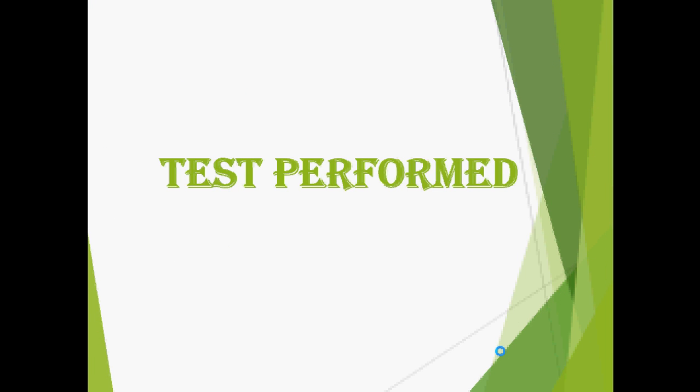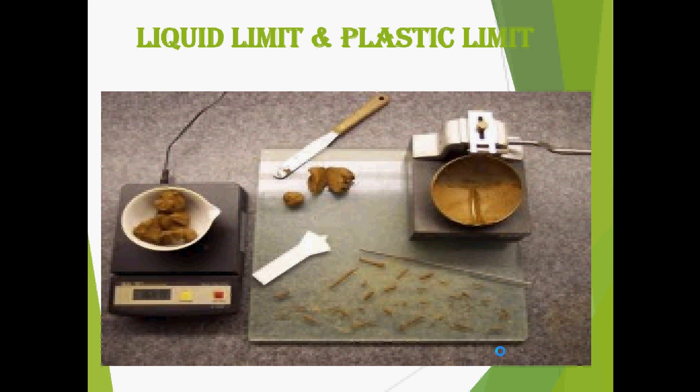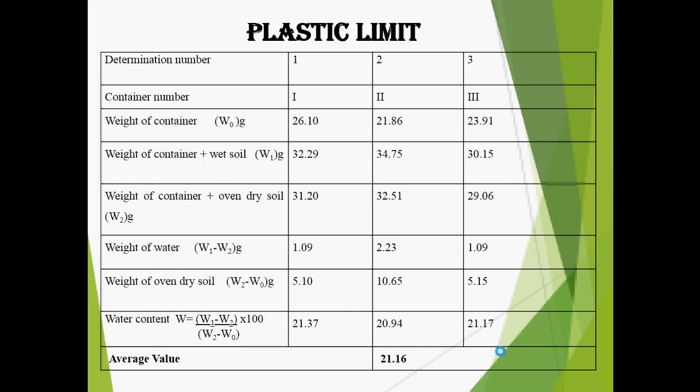Coming to the various tests performed on materials for quality assurance — tests performed on soil were the liquid limit and plastic limit. You can see the liquid limit and plastic limit apparatus. We obtained an average value of 31.50 for liquid limit and 21.16 for plastic limit.